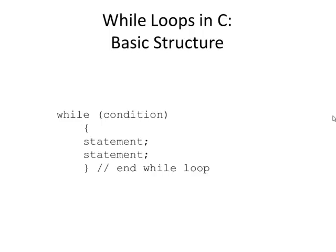The while loop kind of looks like an if statement. You have the word while instead of if, you have a condition, and then surrounded by curly braces you have the statements you want to do. The difference between while and if is: with if, the condition is true, it does the statements once and skips to the end. With while, it does the statements, then comes back up and tests the condition again. If the condition is still true, it does the statements again. When the condition is false, it skips over the loop.